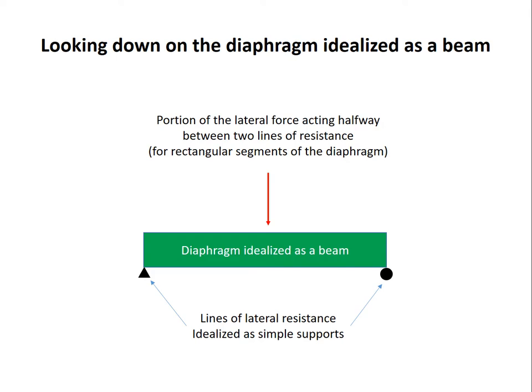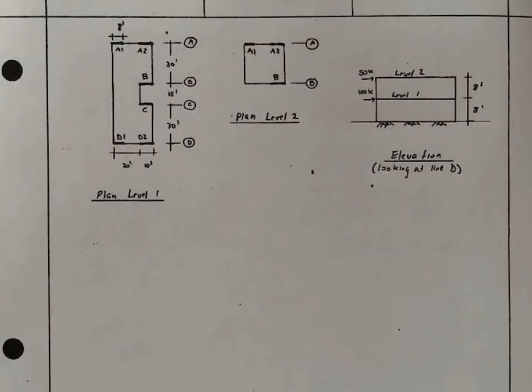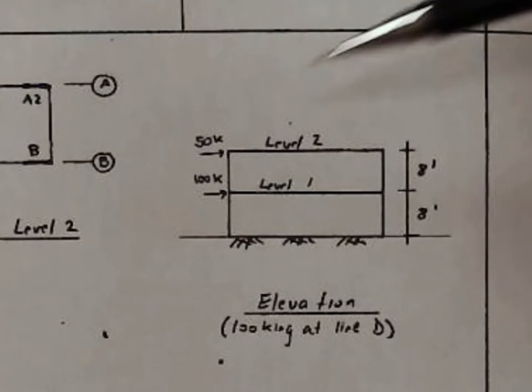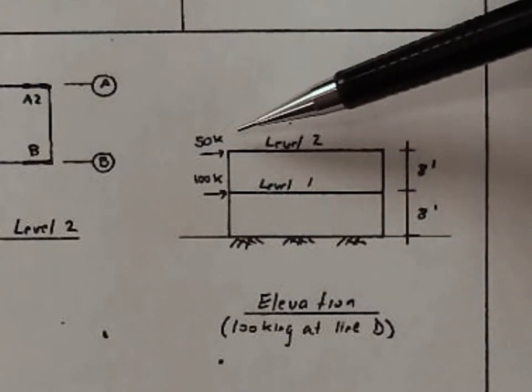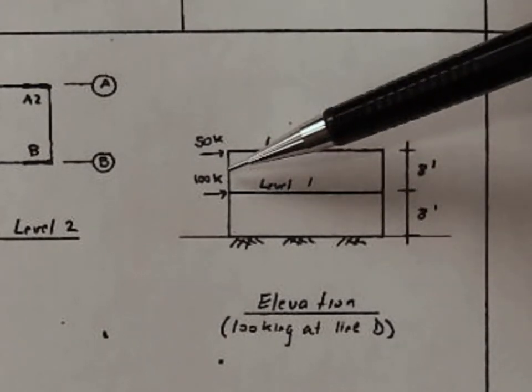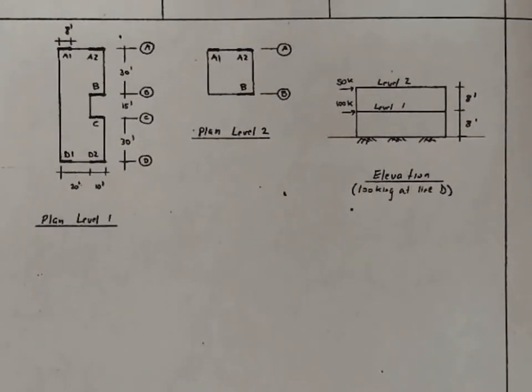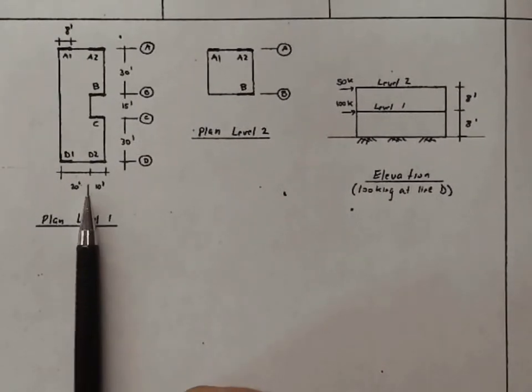Let's move over to pencil and paper. So here we have our example building. We have a two-story building right here. It has seismic forces of 50 kips at the top level, which is named level 2, and 100 kips at the bottom level, which is named level 1, 8-foot-story heights. This is an elevation looking at line D.